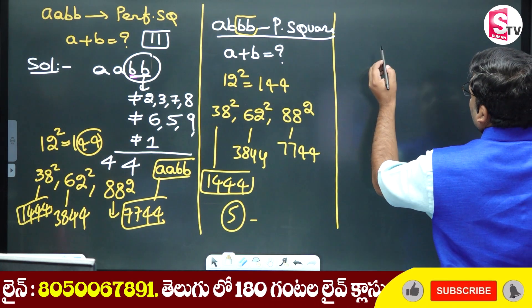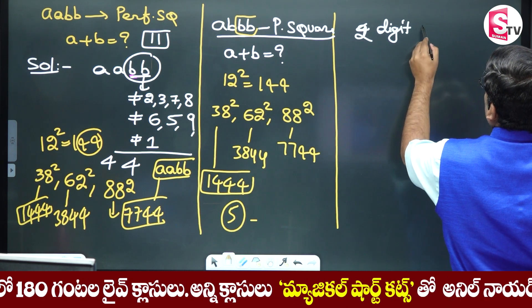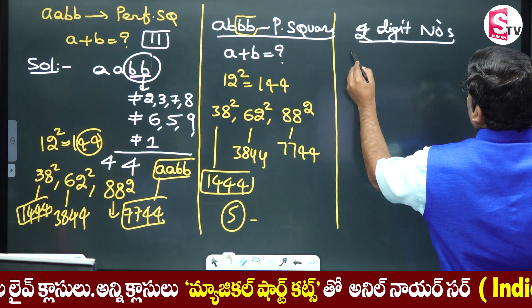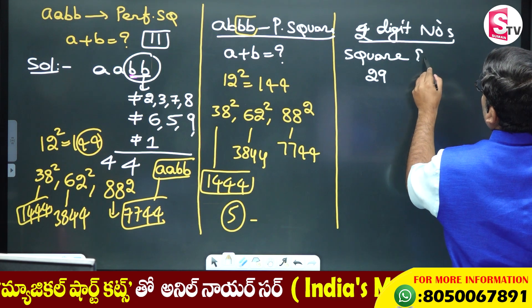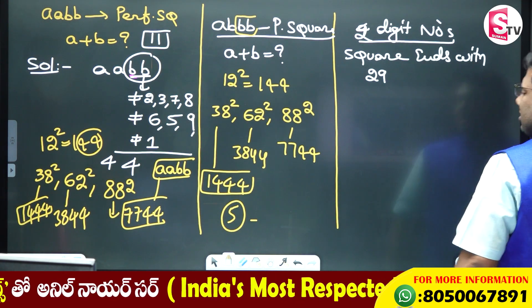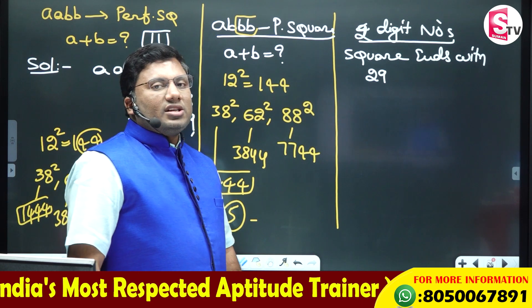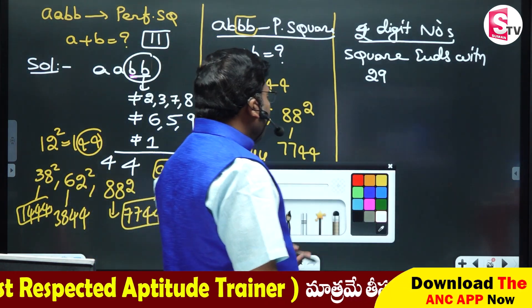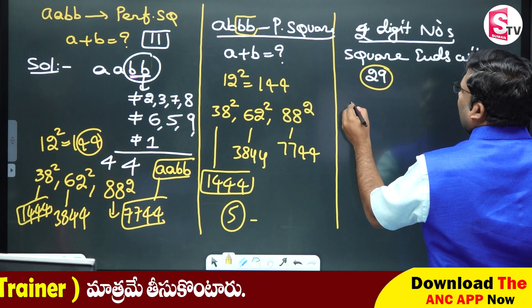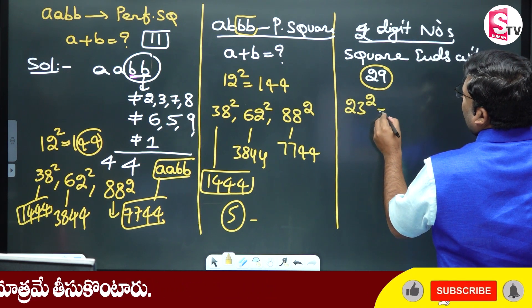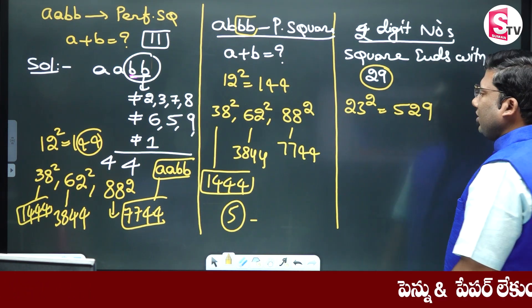How many four-digit numbers are there? How many two-digit numbers, when squared, end in 29? The smallest is 23 square, which is 529 — it ends in 29.